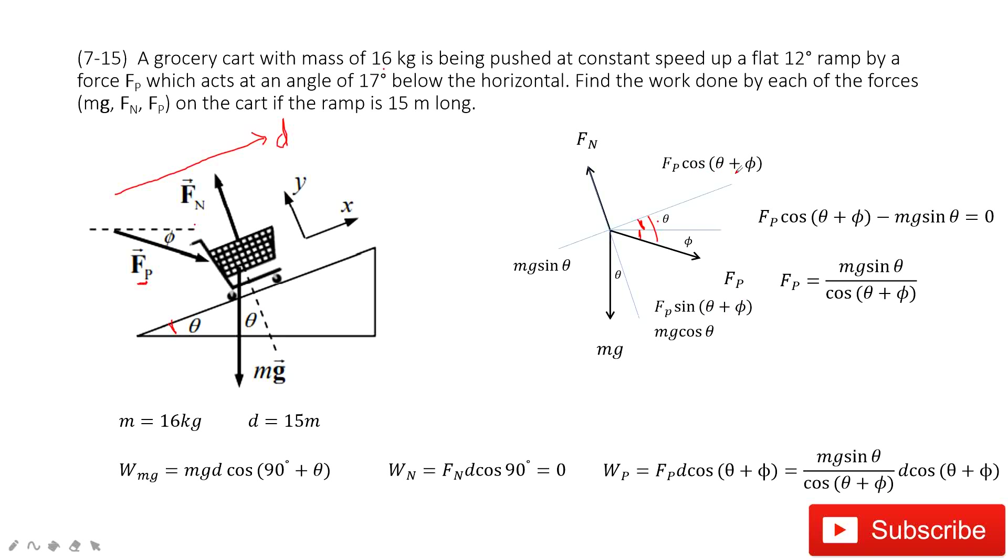How can we find the force? Apply Newton's second law. It tells you this object moves at constant speed, so the acceleration is zero. So along the x-component, we can write the equation: Fp cos(θ + φ) minus Mg sin θ equals zero.